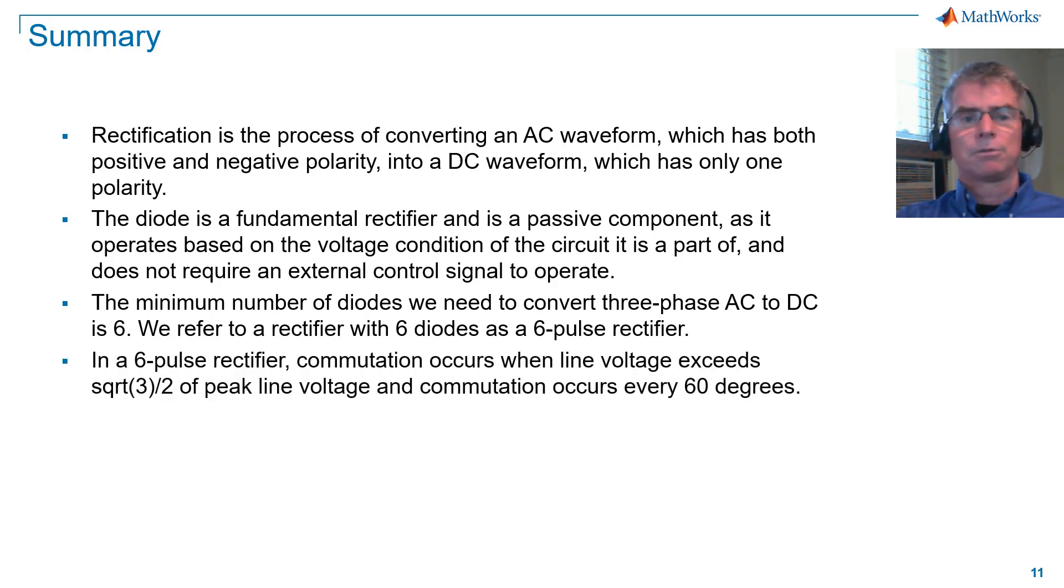In a 6-pulse rectifier, commutation occurs when line voltage exceeds square root of 3 over 2 of peak line voltage, and commutation occurs every 60 degrees.